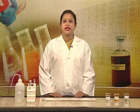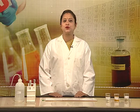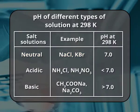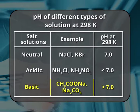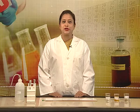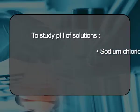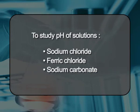Hello learners. When a salt dissolves in water, the solution may be either neutral, acidic or basic. Certain salts like sodium chloride and potassium bromide form neutral solutions with water, whereas some salts like ammonium chloride and ammonium nitrate form acidic solutions, while some salts like sodium acetate and sodium carbonate form basic solutions with water. Today we will study the pH of three different solutions: sodium chloride, ferric chloride, and sodium carbonate.